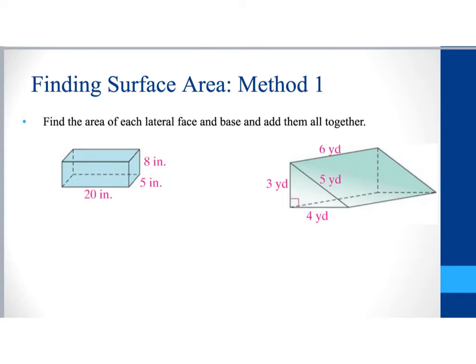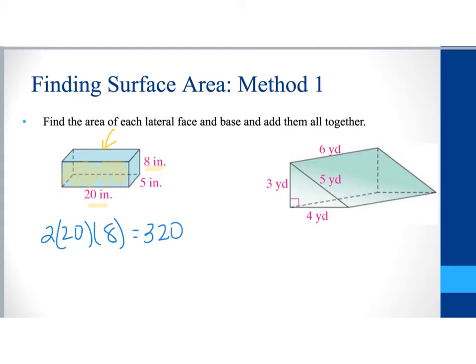There are two different methods we can use. Method one says we find the area of each lateral face and the base, then add them all together. Looking at this rectangular prism, I'll highlight the front face, which is 20 inches by 8 inches. There's also the same face in the back, so we have two of those. Two times 20 times 8 gives us 320 square inches.